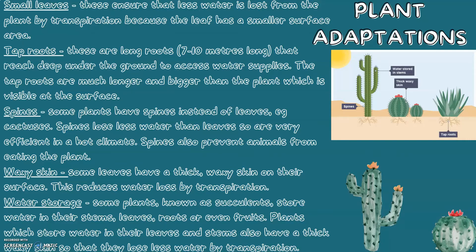Finally, water storage. Some plants known as succulents store water in their stems, leaves, roots, or even fruits. Plants which store water in their leaves and stems also have a thick waxy skin so that they lose less water via transpiration.